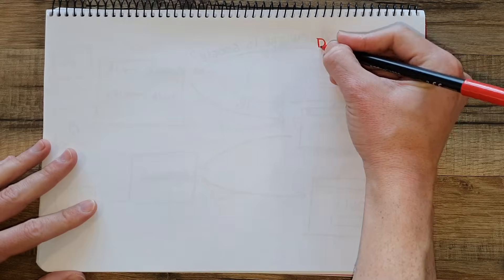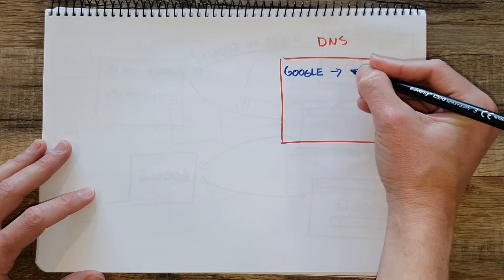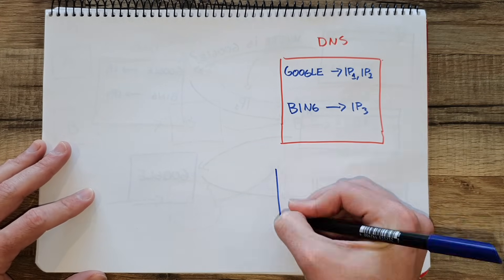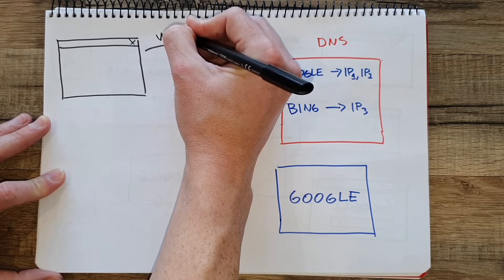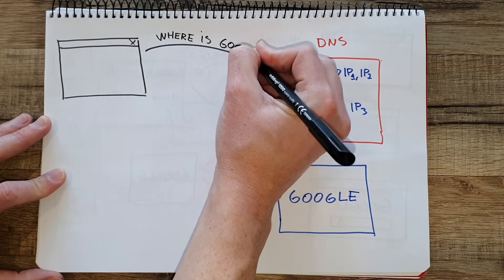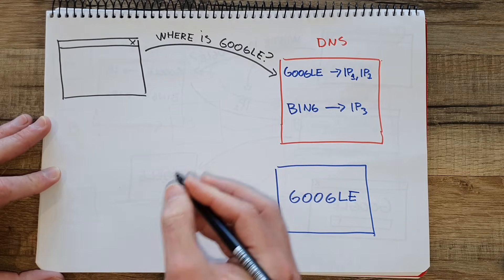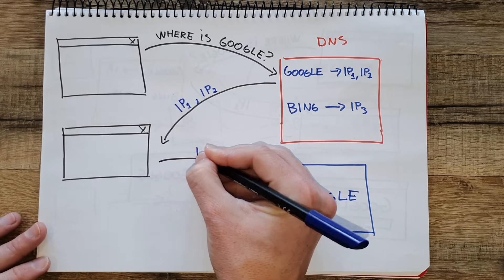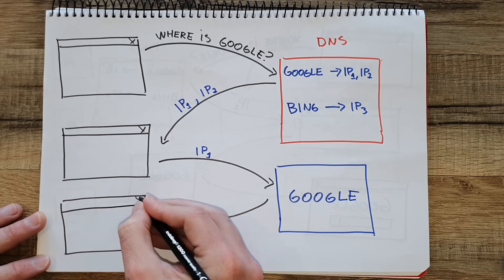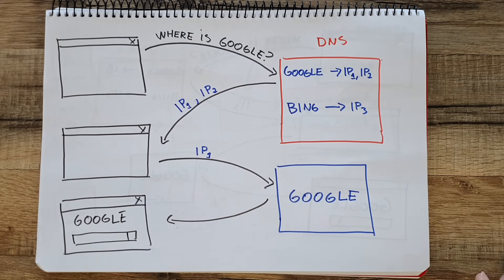There are two places where service discovery can happen: on the client side and on the server side. For client-side discovery, consider this example: when you want to go to a specific site on the internet and you put a URL in the browser, your computer doesn't necessarily know where that website is located. So it will ask a DNS service for the registry — querying which IP addresses are associated with that domain. The IP addresses are returned, your computer picks one, and it hits the service at that IP address. Then the website is rendered on your computer.